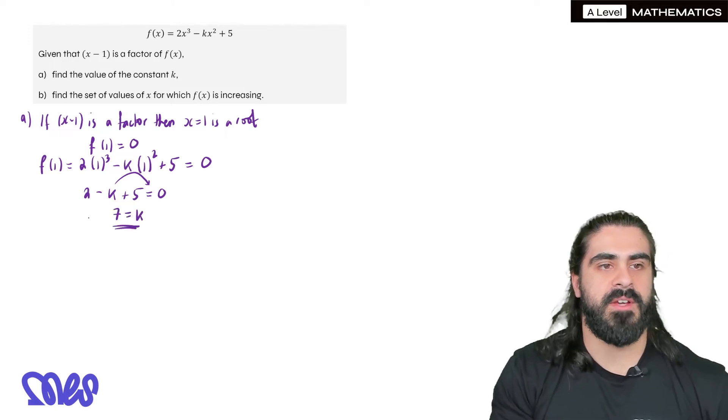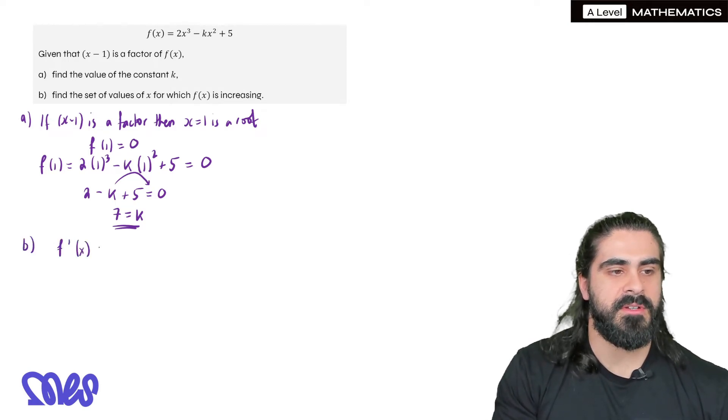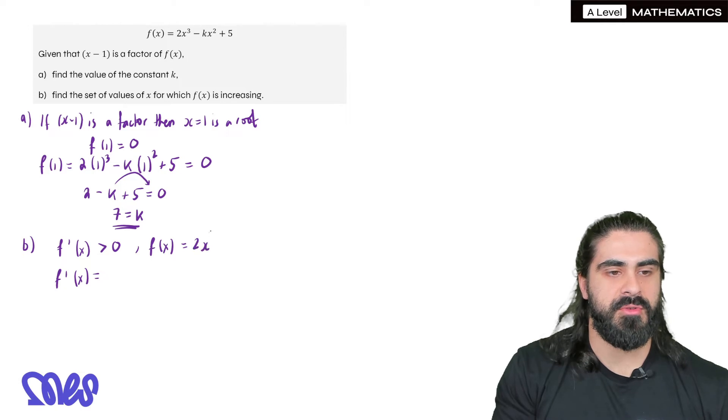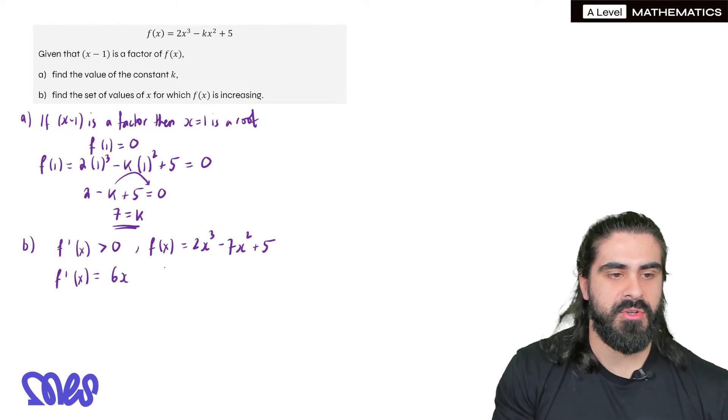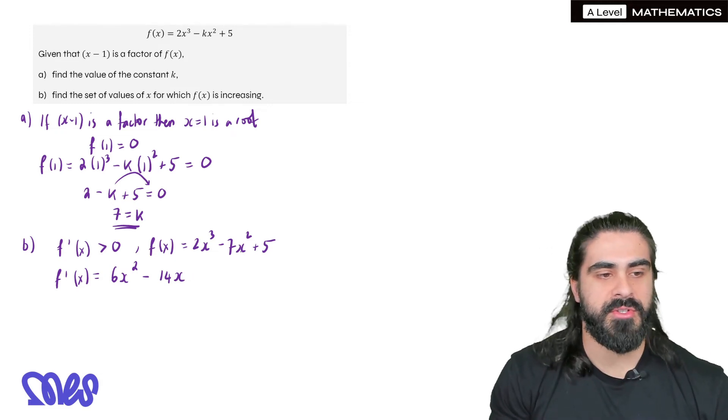Find a set of values of x for which f(x) is increasing. So remember an increasing function is when the gradient function is bigger than 0. So we're going to differentiate. So our function at the moment with k subbed in, we have 2x³ - 7x² + 5. So we bring down the 3, 2 times 3 is 6x². Knock one off the power is squared minus 14x. And then the 5. Remember 5 is a horizontal line. The gradient 0. So constants disappear.